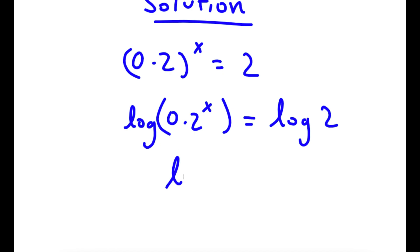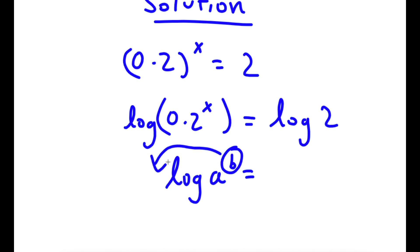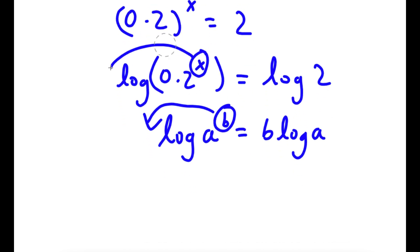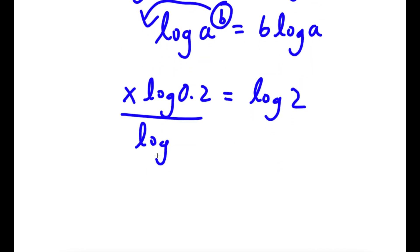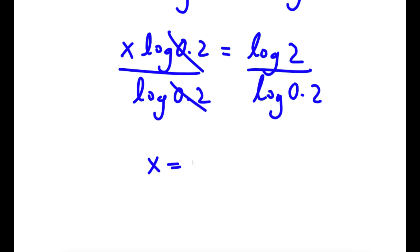If I have something in the form log a to the power of b, I can move b to the front, so this equals b times log a. So in this case, I have log 0.2 to the power of x, and I can move x to the front. So now I have x times log 0.2 is equal to log 2. If I divide both sides by log 0.2, these two cancel out, and I get x is equal to log 2 over log 0.2.